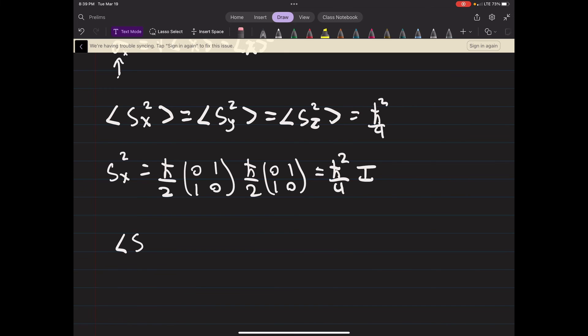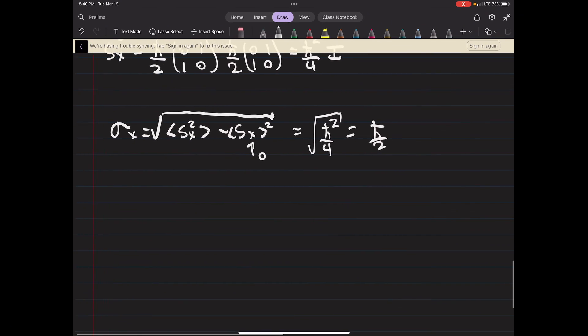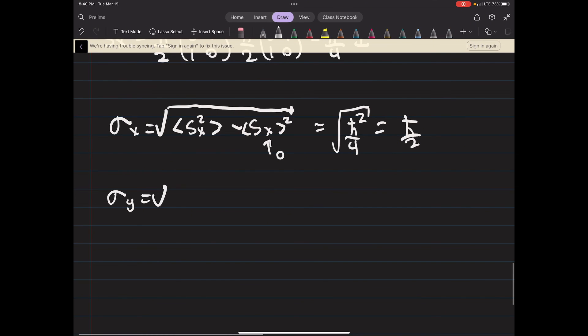So if we want to find the standard deviation of the x part of our spin, well that's going to be the square root of h bar - the expectation value. Okay, well this is zero, so it's going to be the square root of h bar squared over 4, which is obviously h bar over 2. And they're all going to follow the same process here if we want to find the y component.